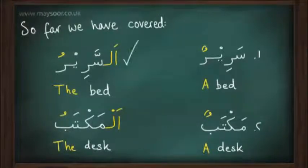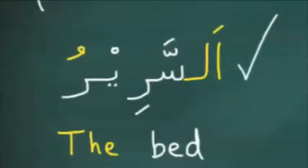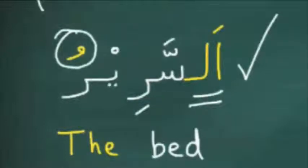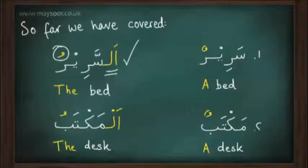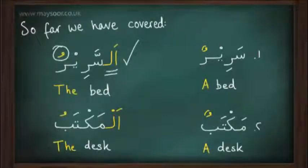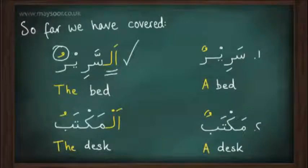We can see that once alif and lam has been added to the noun, it then loses the tanwin, leaving only one dhamma remaining. The noun is also referred to as being ma'arifah, definite. So we say as-sariru and not al-sariru. This is because the noun sarirun begins with a harfu shamsiyya — a letter of the sun. For an explanation of the letters of the sun and moon, please refer back to lesson number four.